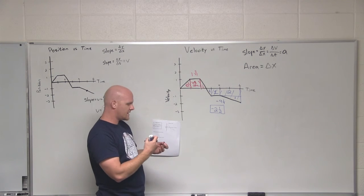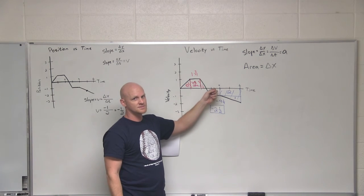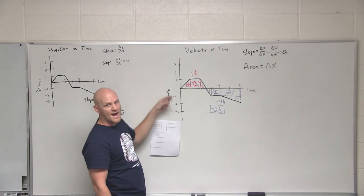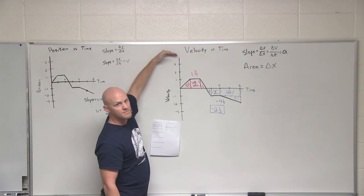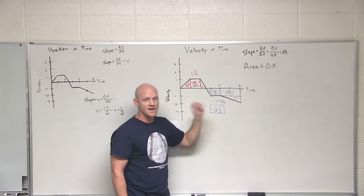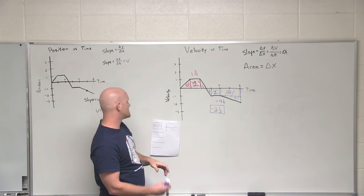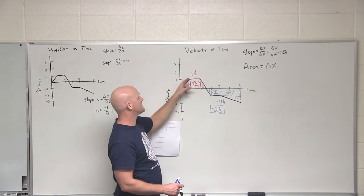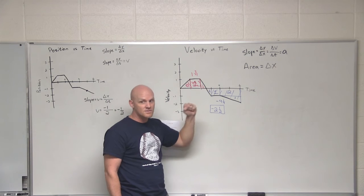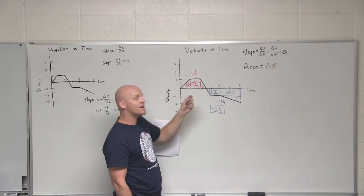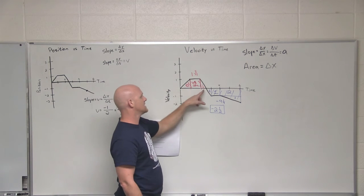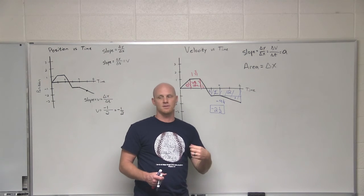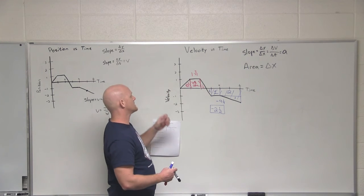Next question: where is the velocity positive, negative, and zero? Remember, you get velocity off the y-axis, not the slope — slope gives acceleration. Velocity is zero when the graph crosses zero. It's positive everywhere above zero on the y-axis. Don't get confused by a negative slope — velocity is positive anywhere above zero and negative everywhere below zero.